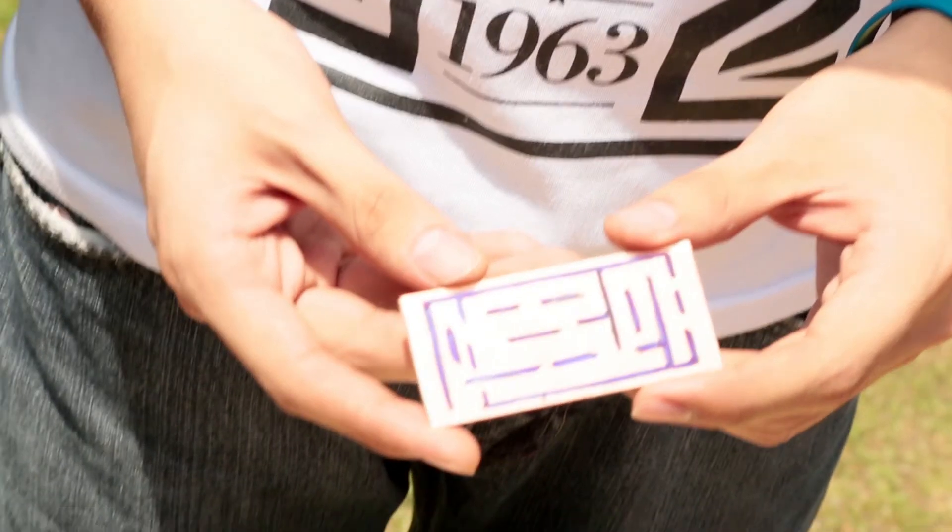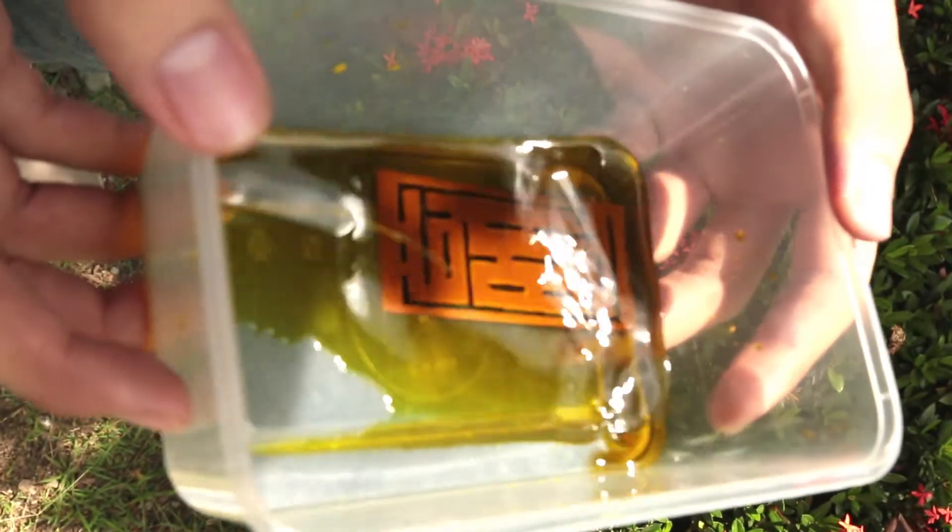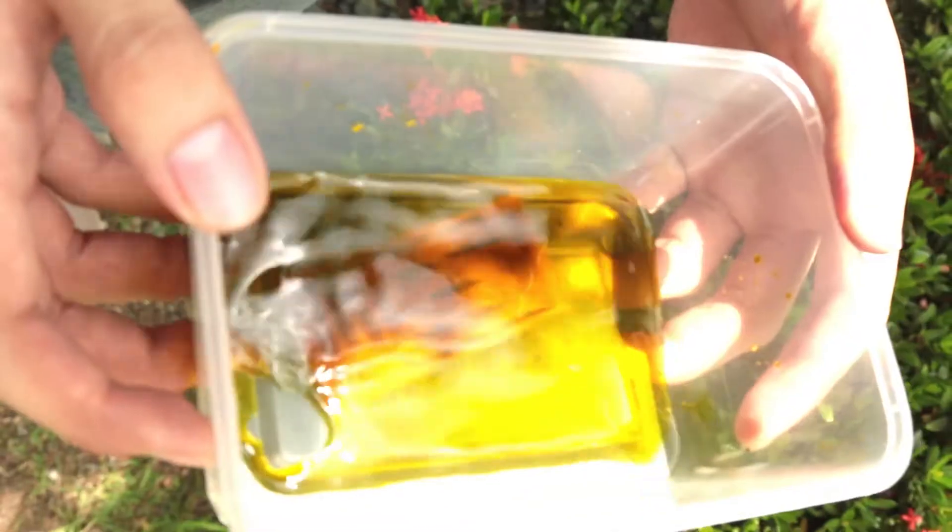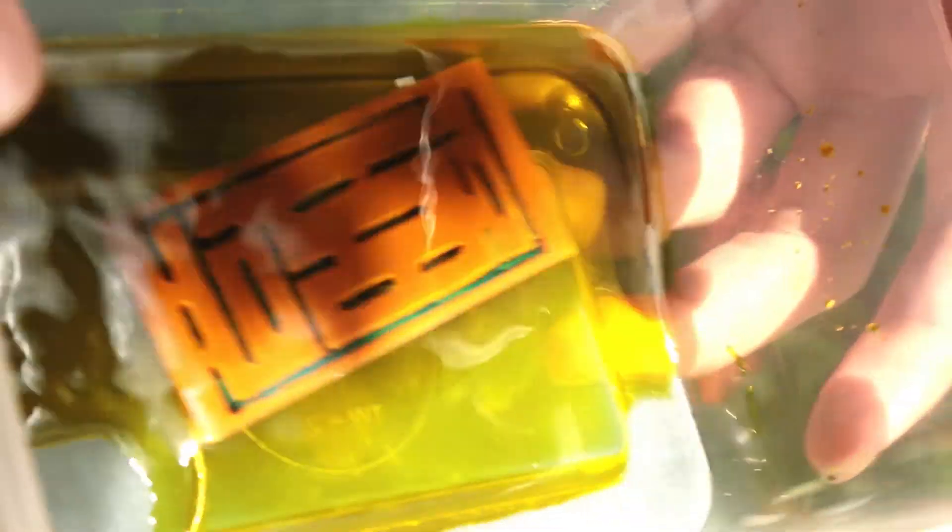Submerge the PCB with the layout into ferric chloride. You don't need much, just enough to submerge it. Agitating this size takes about five to ten minutes of continuously shaking the container until the unwanted copper is completely removed.